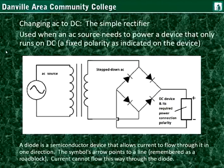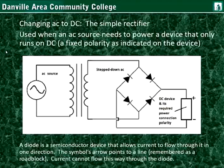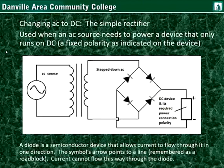Devices that can run on alternating current include toasters, electric ovens, refrigerators, freezers, blow dryers, fans, and light bulbs — the current can pass through those devices in either direction so long as there is a potential. Electronic components work by use of semiconductors and other devices, and they must have a DC source similar to a battery.